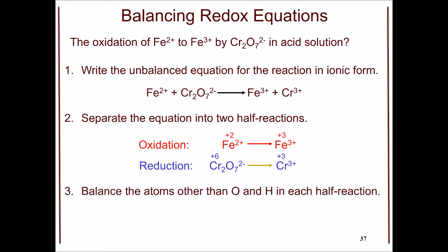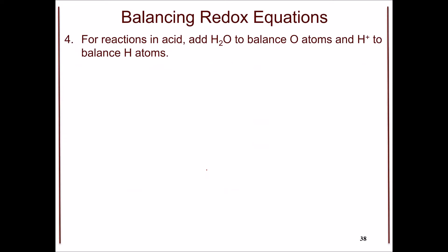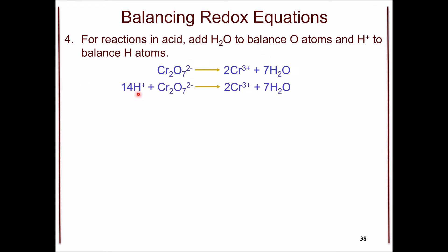We need to balance the atoms in both half reactions separately for atoms other than oxygen and hydrogen. For the chromate, you start with two chromium atoms on the left-hand side, so you need a coefficient of two on the right-hand side. Since the reaction is in acid, we add water molecules to the right-hand side to balance oxygen atoms, and hydrogen ions to the left-hand side to balance hydrogen. For this half reaction, we have seven oxygen atoms on the left, so we need seven water molecules, and then we add 14 hydrogen ions to balance hydrogen on the right.